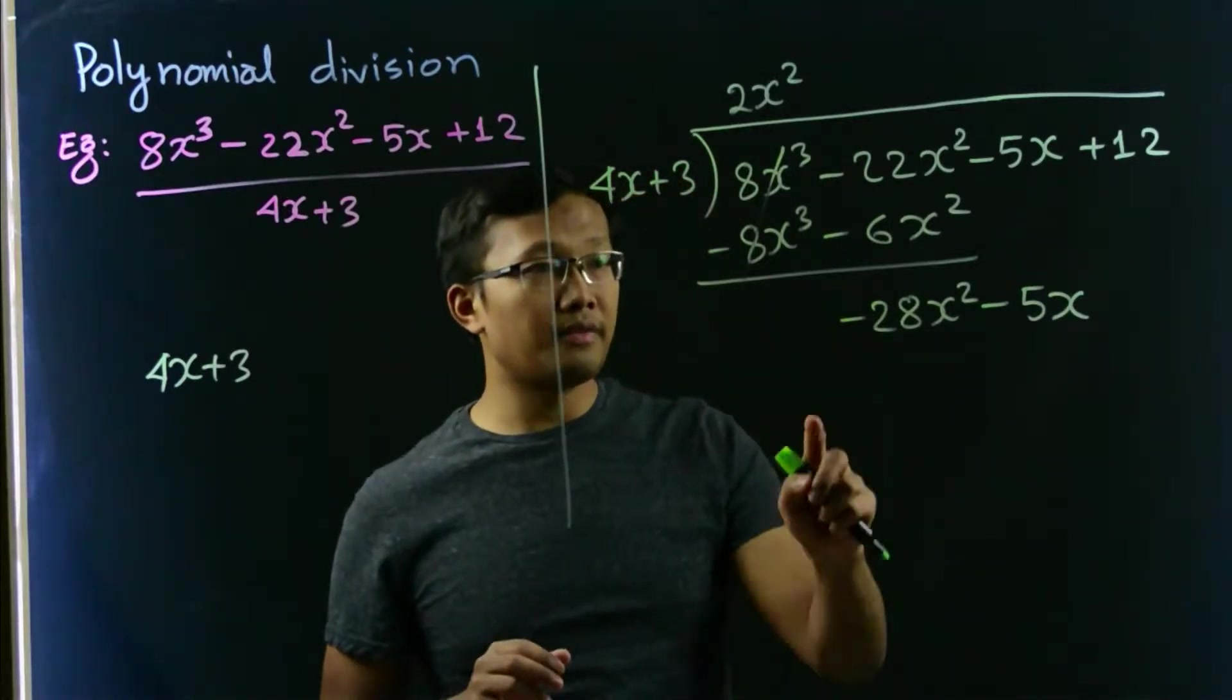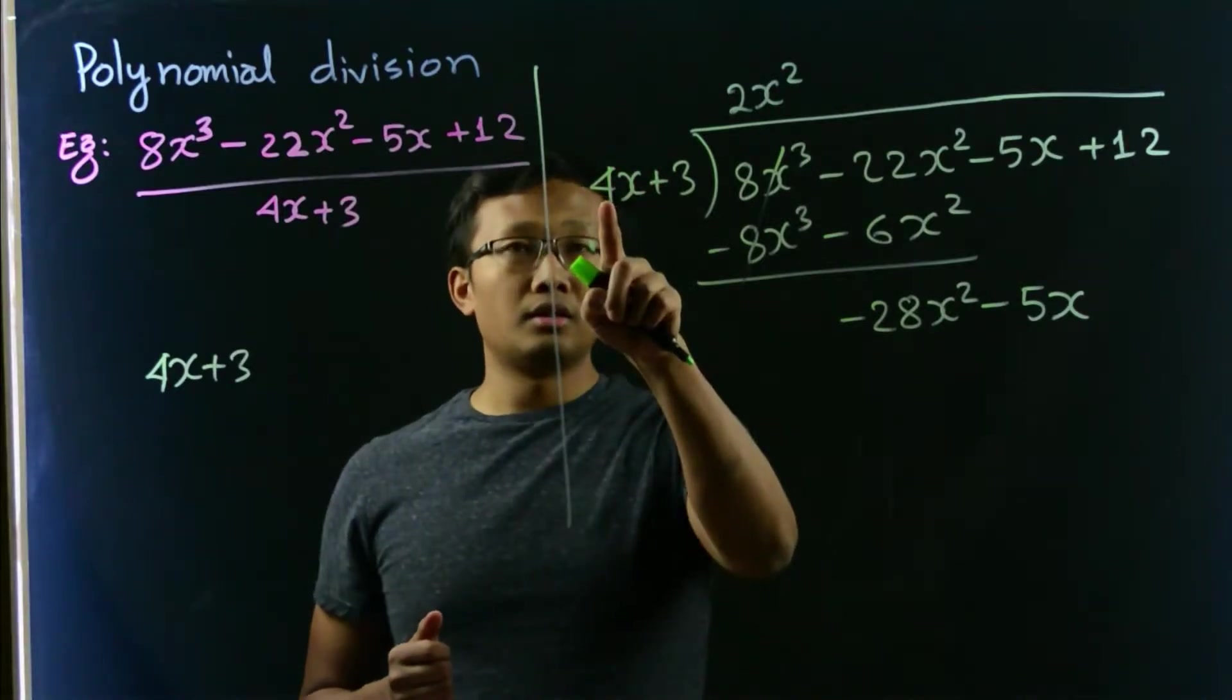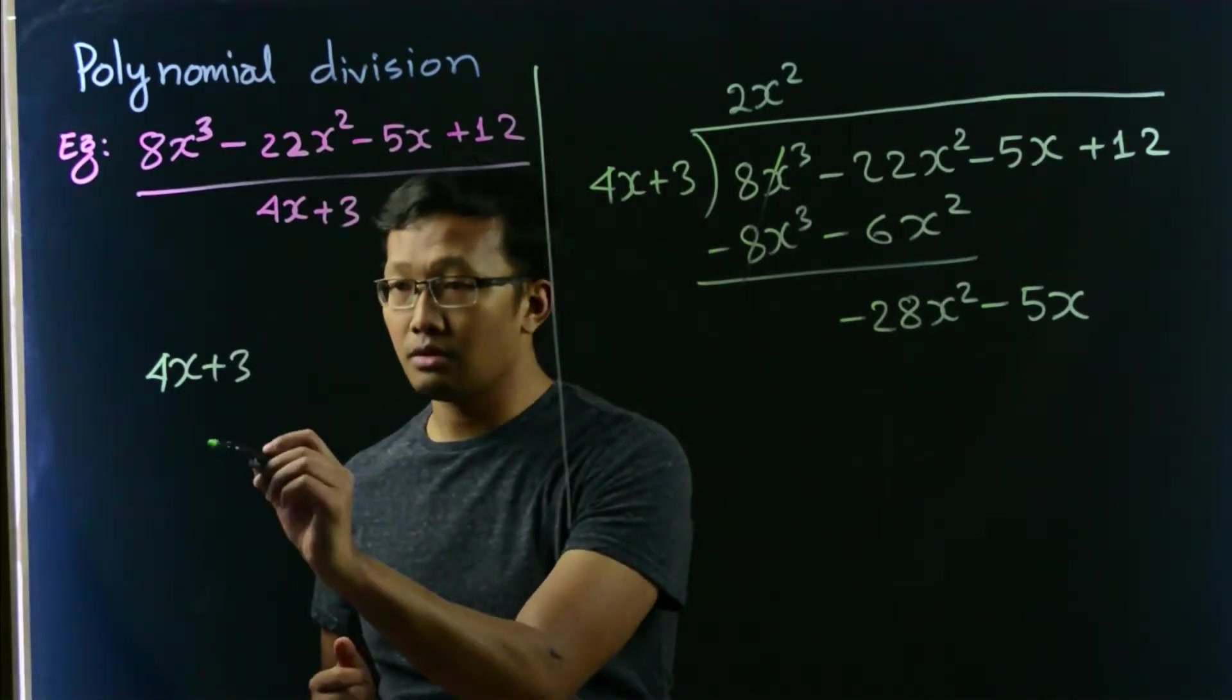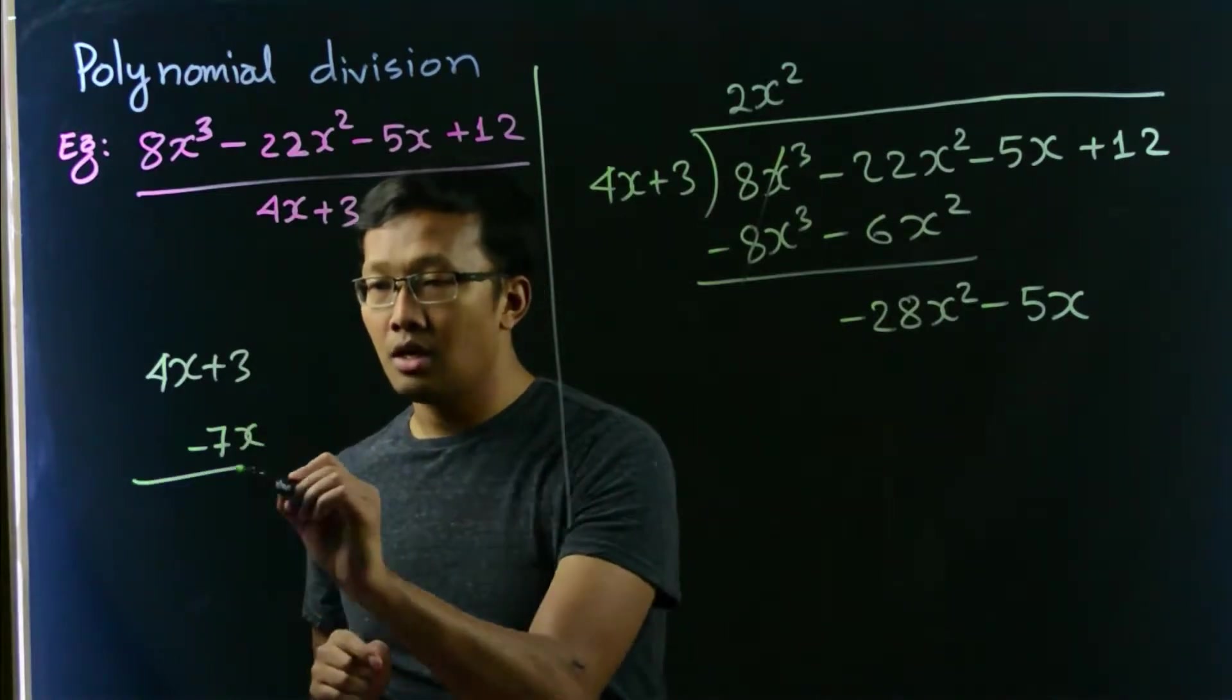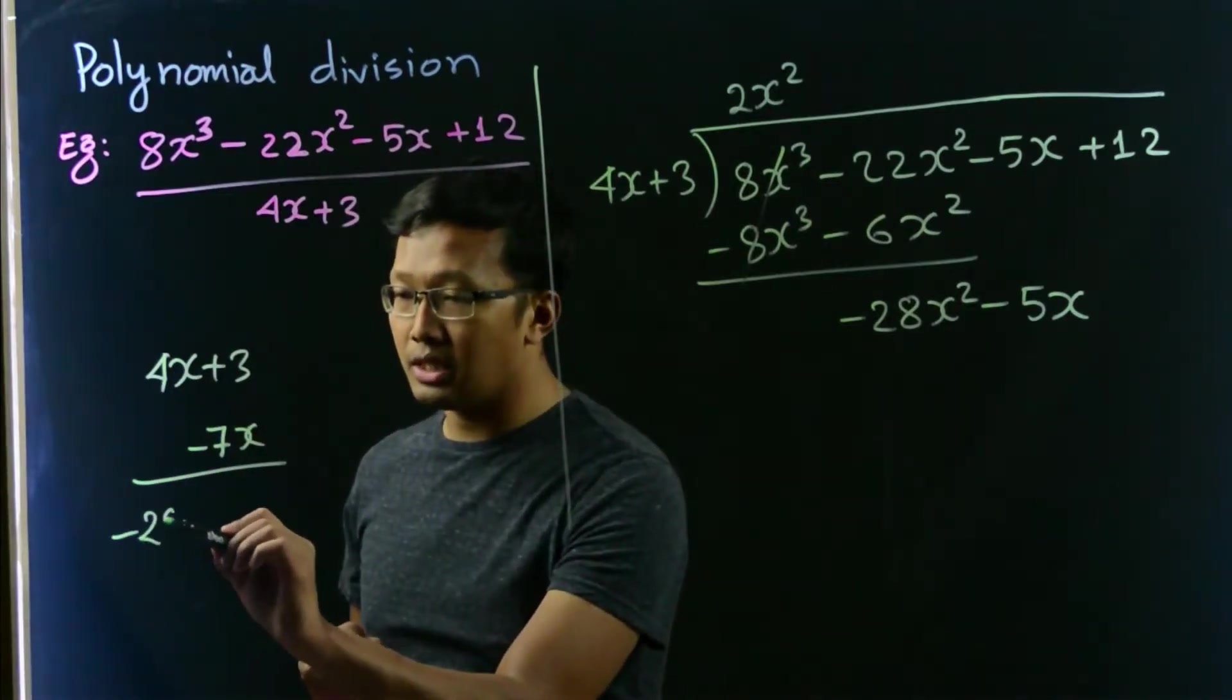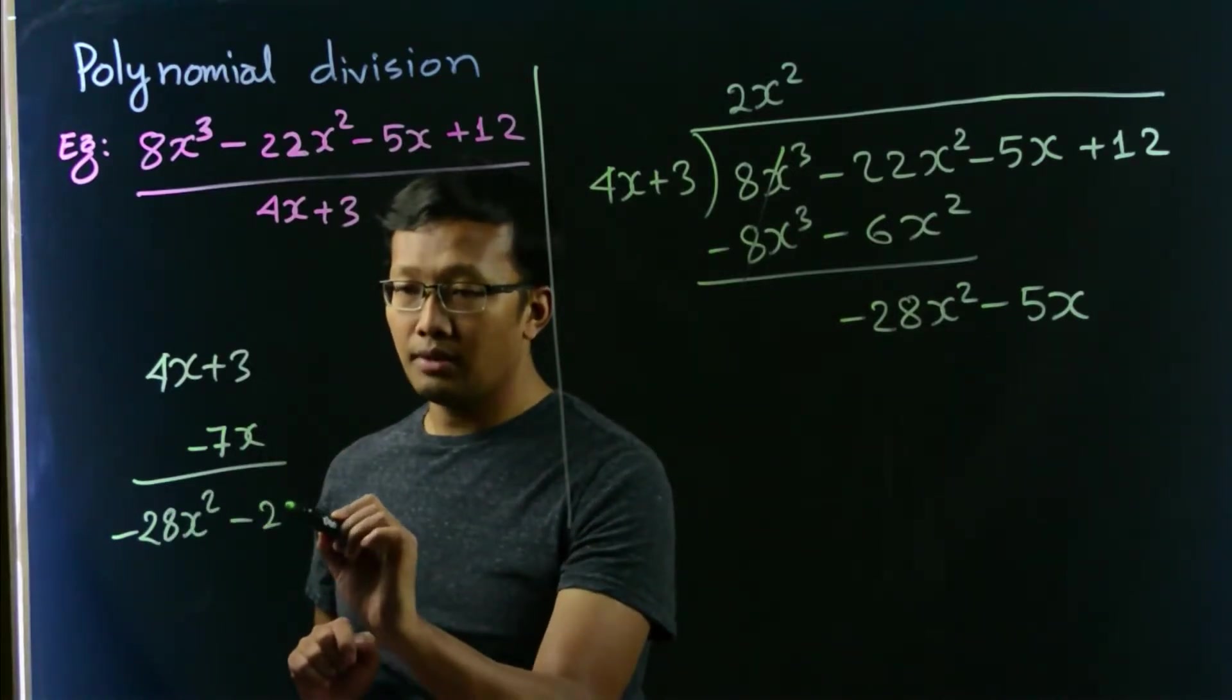We would like to get rid of negative 28x squared. So for that, we know that 4 times 7 is 28, so let's write negative 7, and we have x squared, so let us multiply by x. So that would be negative 7x times 4x would be negative 28x squared minus 7 times 3, 21x.